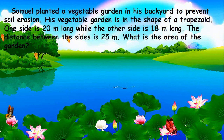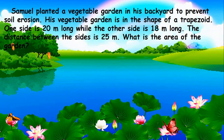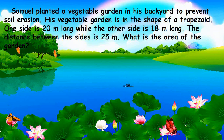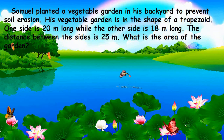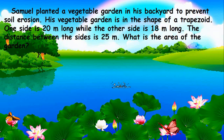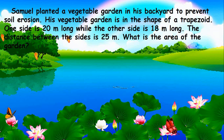We have finished discussing routine word problems, and it requires steps to be solved. Let me read it for you. Samuel planted a vegetable garden in his backyard to prevent soil erosion. His vegetable garden is in the shape of a trapezoid. One side is 20 meters long while the other side is 18 meters long. The distance between the sides is 25 meters. What is the area of the garden?